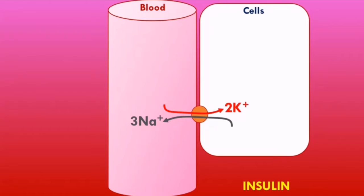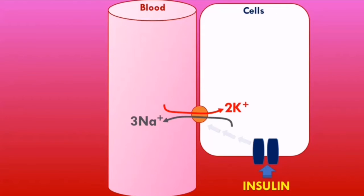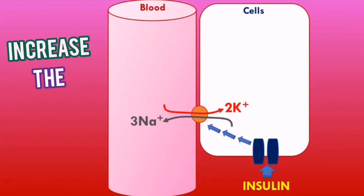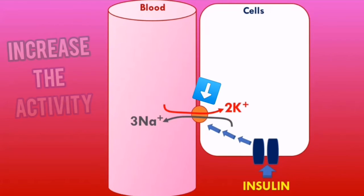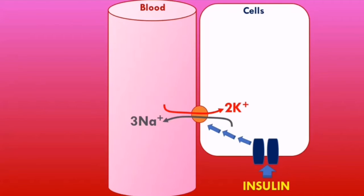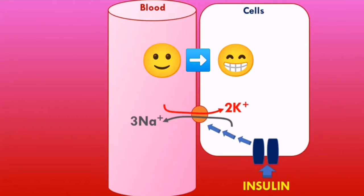Now let's talk about insulin. Insulin has very important metabolic effects with regards to glucose and fat metabolism, but it also has a very important function in regulating serum potassium levels. When insulin binds to its receptor on cells, it stimulates an intracellular signaling cascade. This cascade increases the activity of the sodium-potassium ATPase pumps, causing potassium to shift from the blood into the cells.